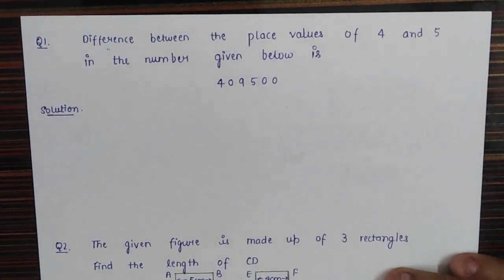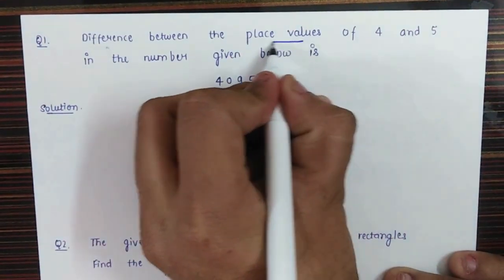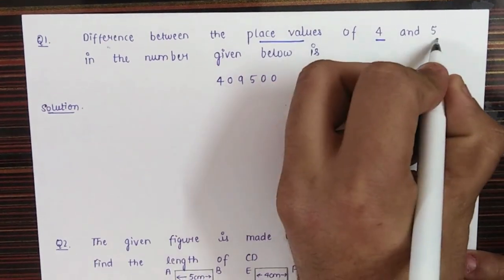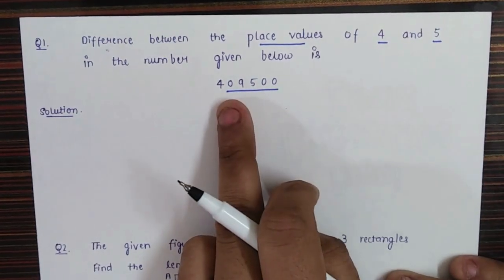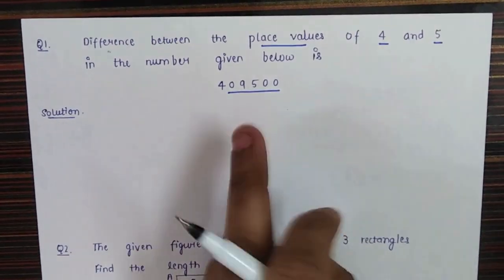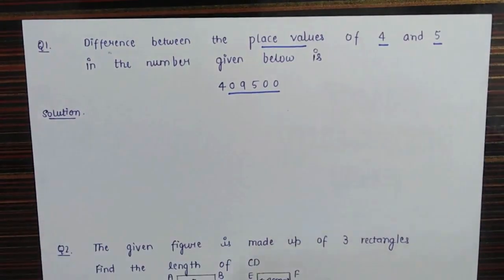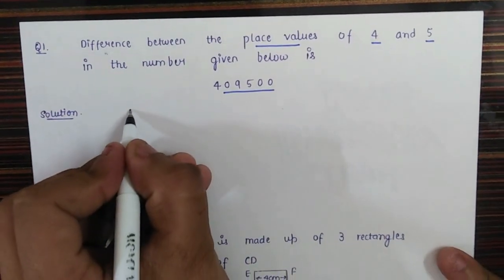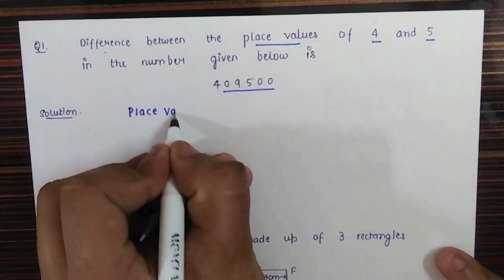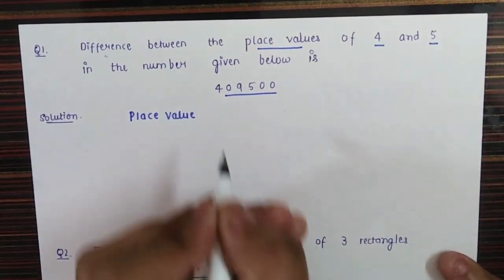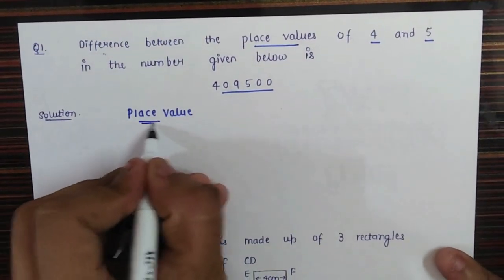Today's first question is: find the difference between the place values of 4 and 5 in the given number. We want to calculate the difference between the place values of 4 and 5. If you don't know what a place value is, I will make a detailed video for that. Simply put, place value depends on the position of a particular digit in the number.